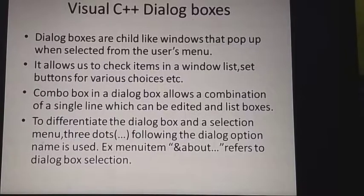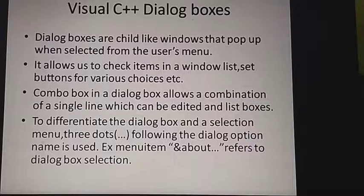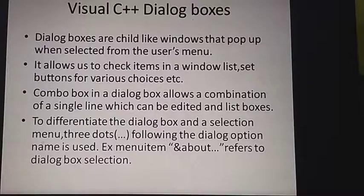Visual C++ dialog boxes are child-like windows which pop up whenever the user selects them from the user's menu. They can be used to check items in the window list, set buttons for various choices, and so on. The combo box in the dialog box allows the user to see a combination of a single-line editable field and a list box.